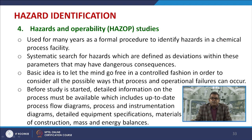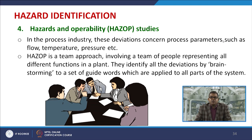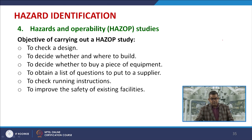The basic idea is to let the mind go free in a controlled fashion to consider all possible ways that process and operational failure can occur. Before studies start, detailed information must be available including up-to-date process flow diagrams, P&IDs, detailed equipment specifications, material of construction, and mass and energy balances. In the process industry, deviations concern process parameters such as flow, temperature, and pressure. HAZOP analysis is a team approach with representatives of all plant functions, who identify deviations by brainstorming using a set of guide words applied to all parts of the system.